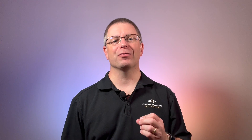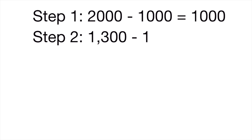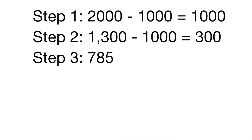Step 2: calculate the difference between the first index value and the intermediate value. So 1,300 minus 1,000 leaves 300 feet. In step 3, we'll find the difference between the corresponding resulting values. In this case, 785 minus 715 leaves 70.